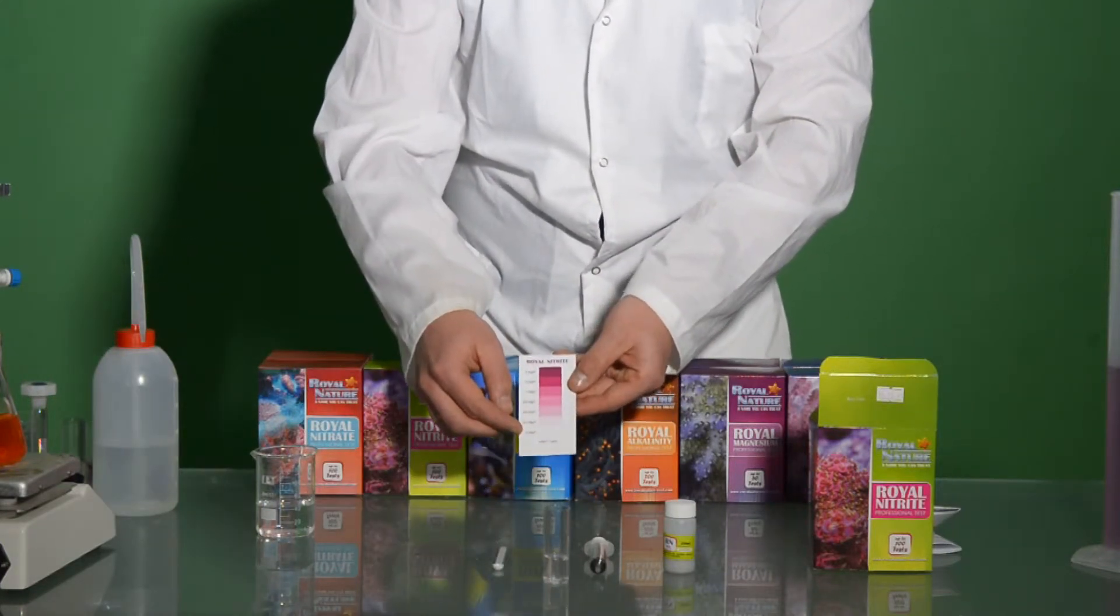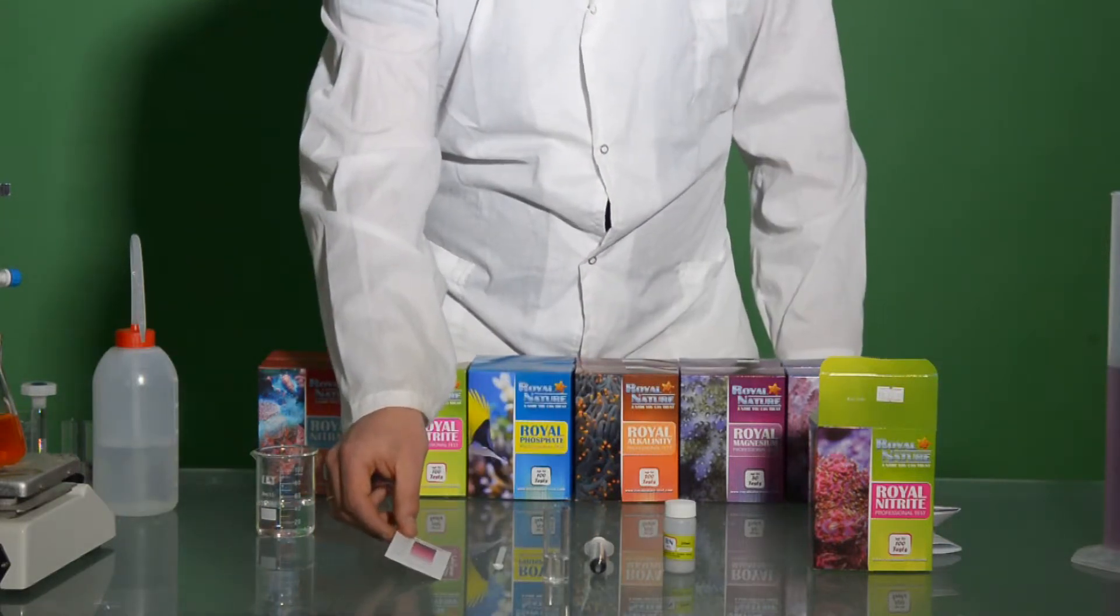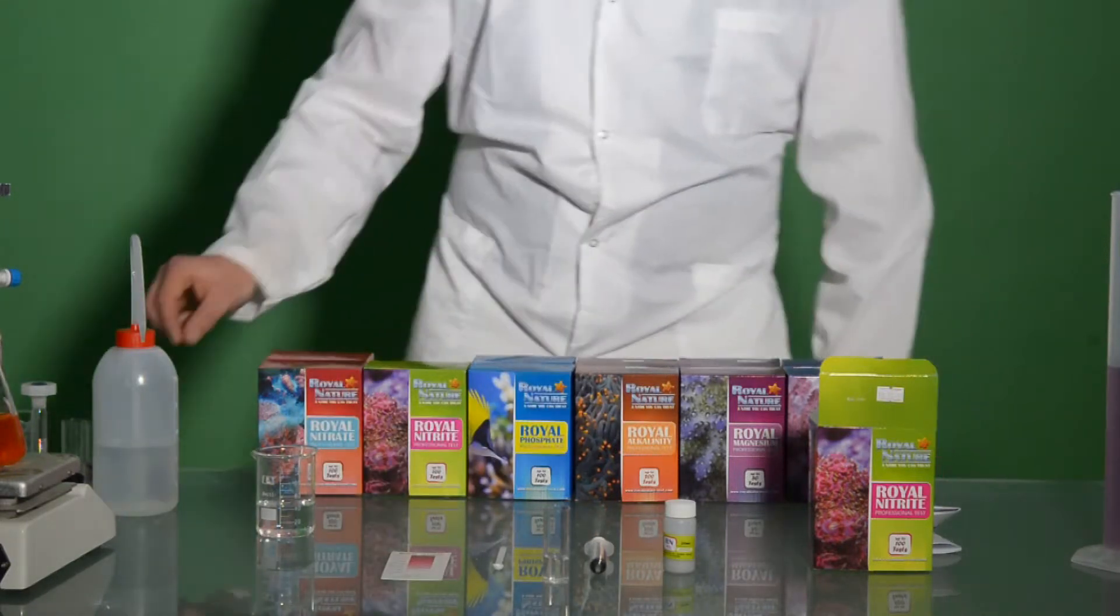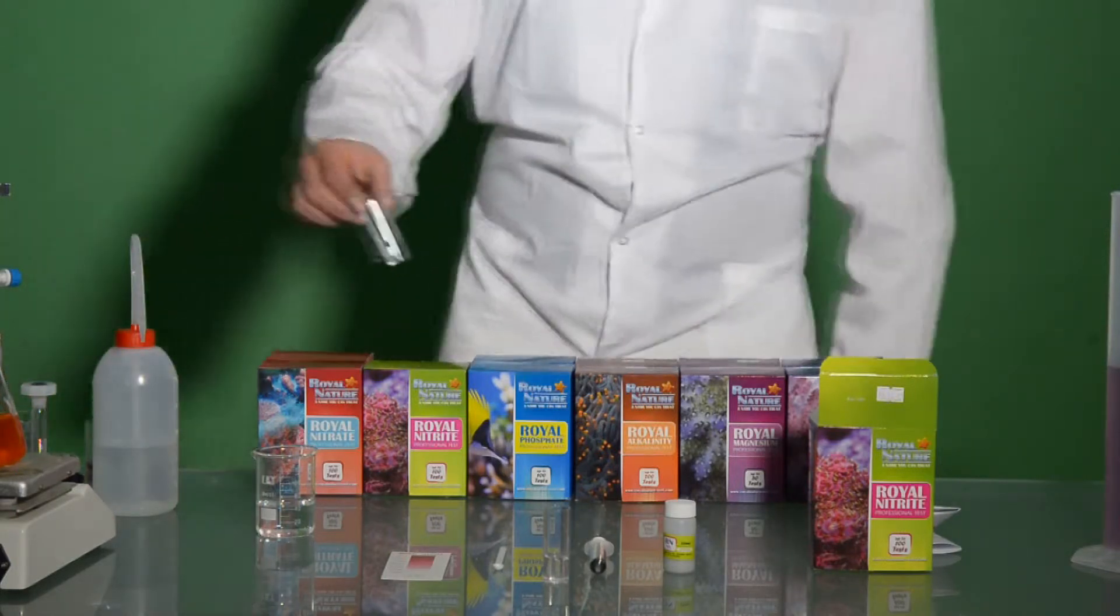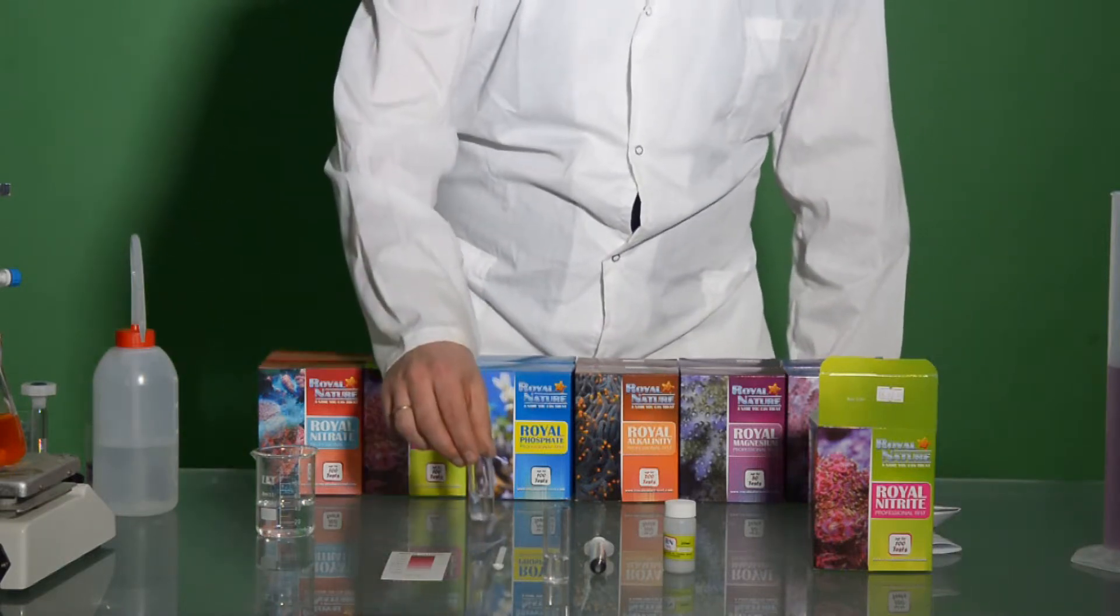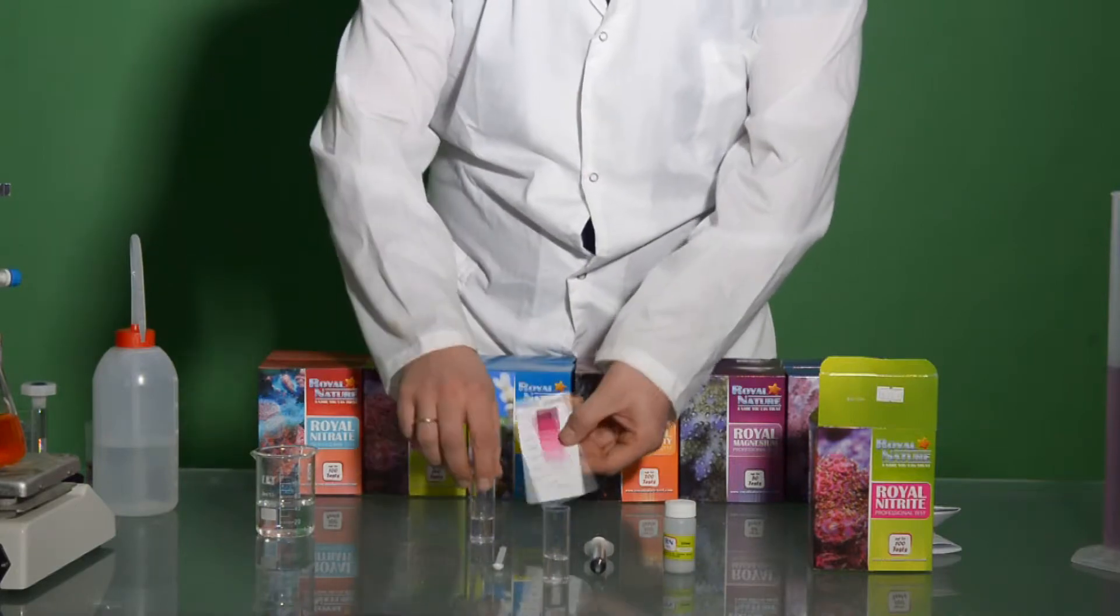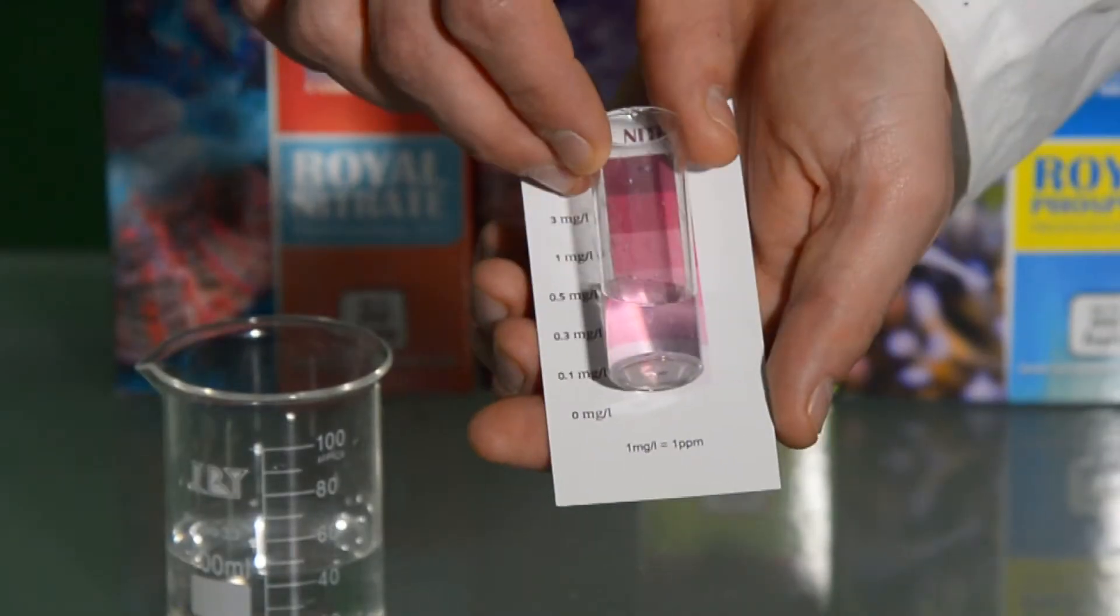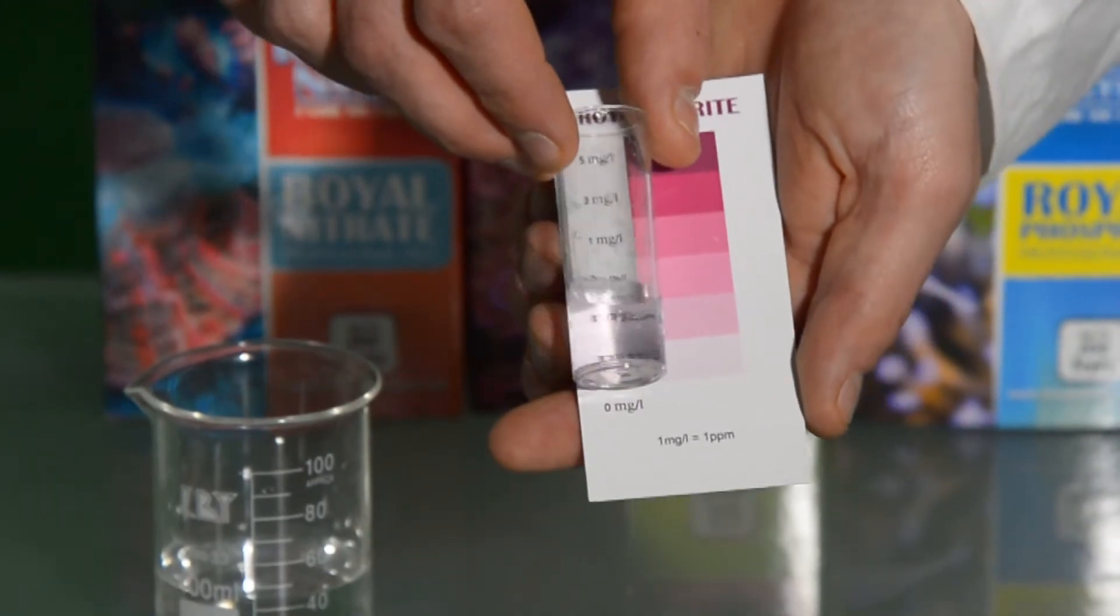In order to show you what the different colors are, we prepared in our lab more solutions with different levels of nitrates. The first one would be 0.1ppm and we can see the color next to the chart.